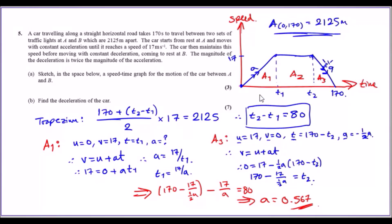I approached this in three ways, labeling them A1, A2, and A3 to work over segments. First, I used the trapezium rule — treating the velocity-time graph as a trapezium to find the area and match it to the total distance. Using the trapezium rule: base of 170, top of T2 minus T1, divided by 2, times the height of 17, giving a total area of 2,125 meters.